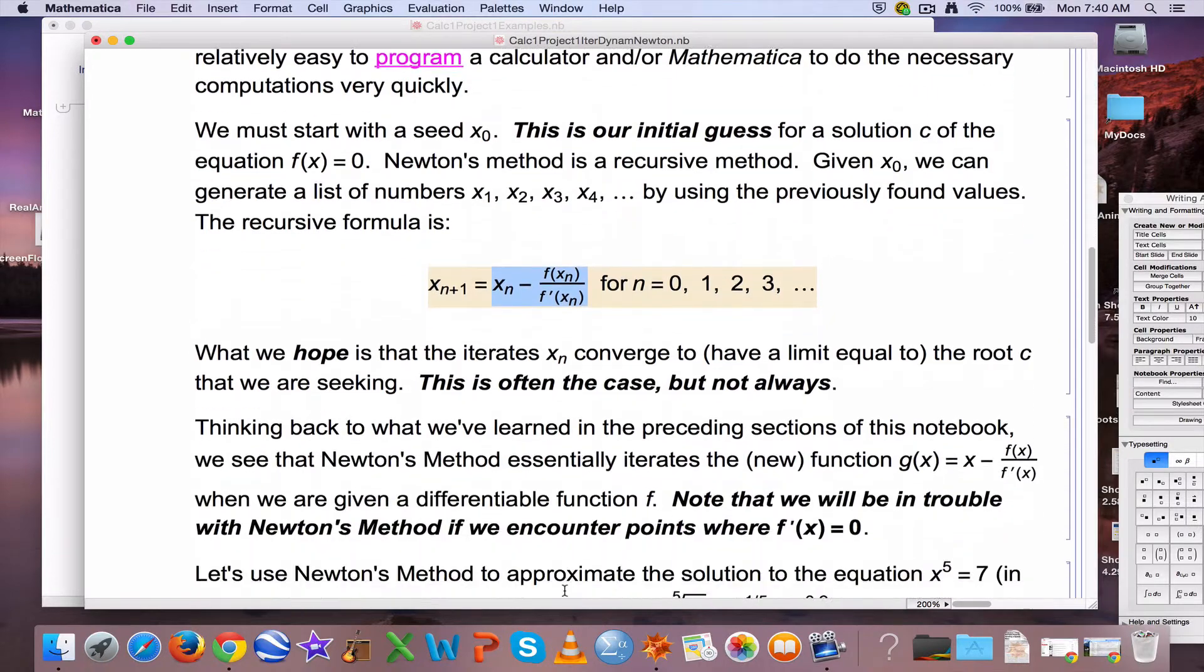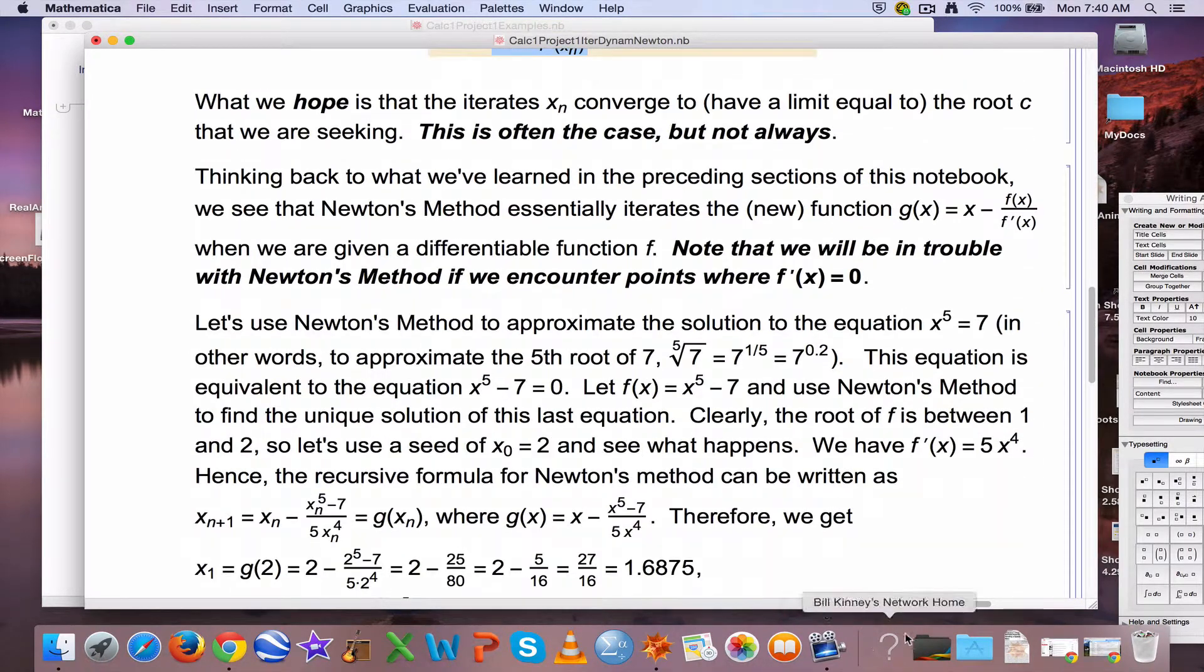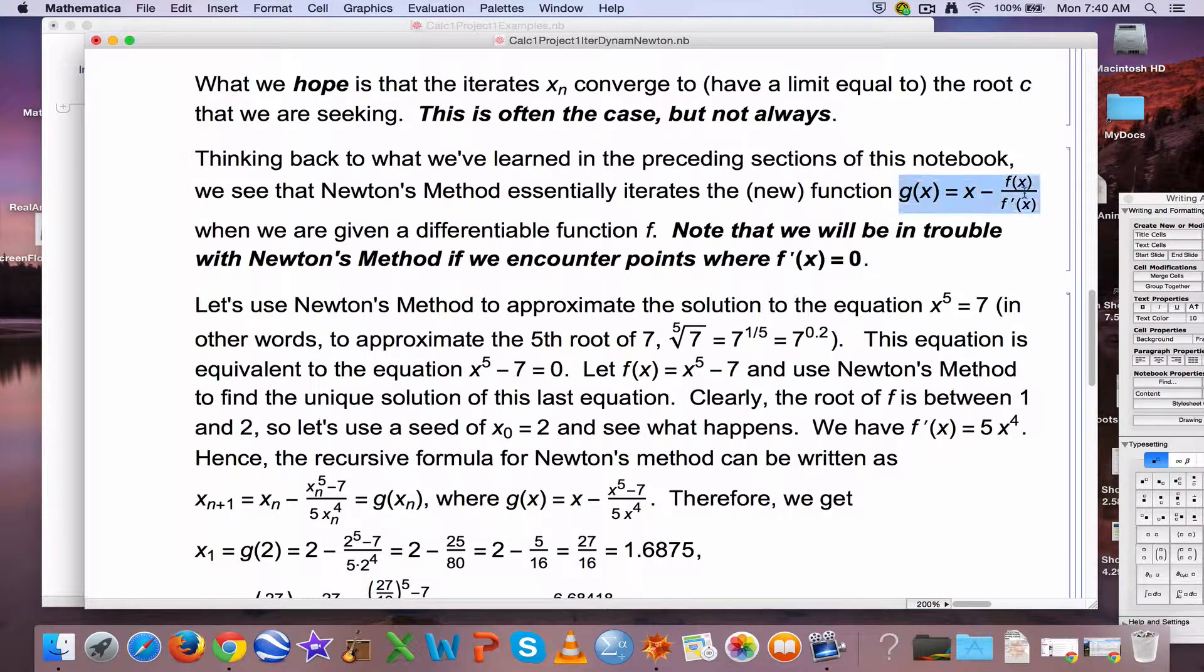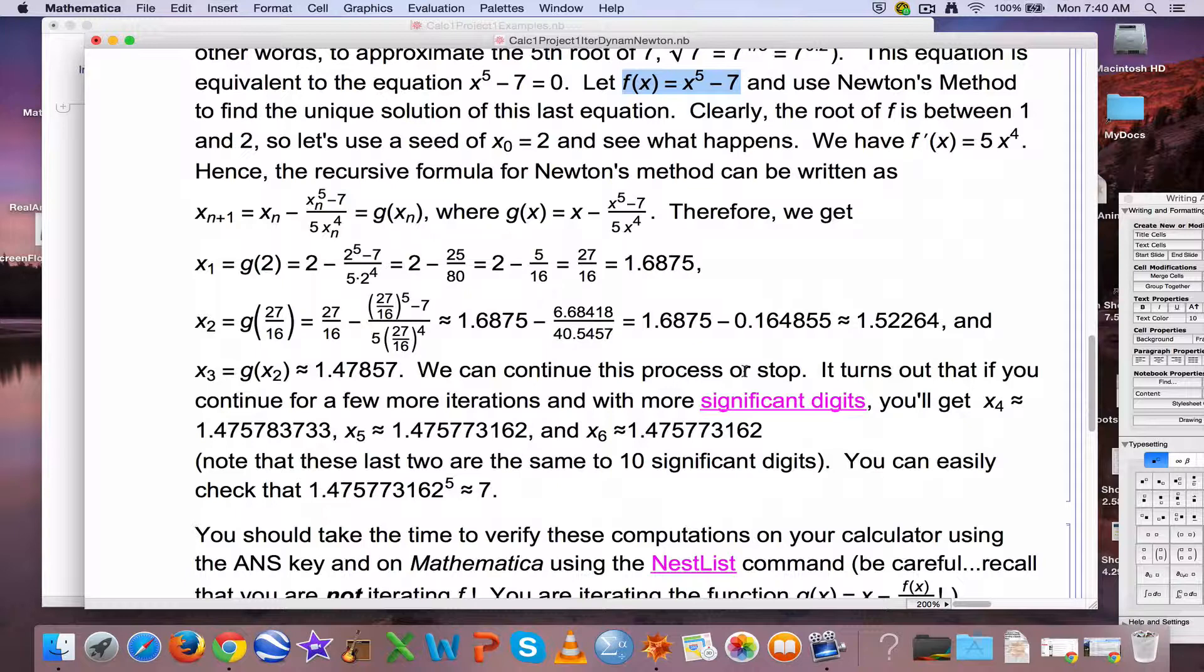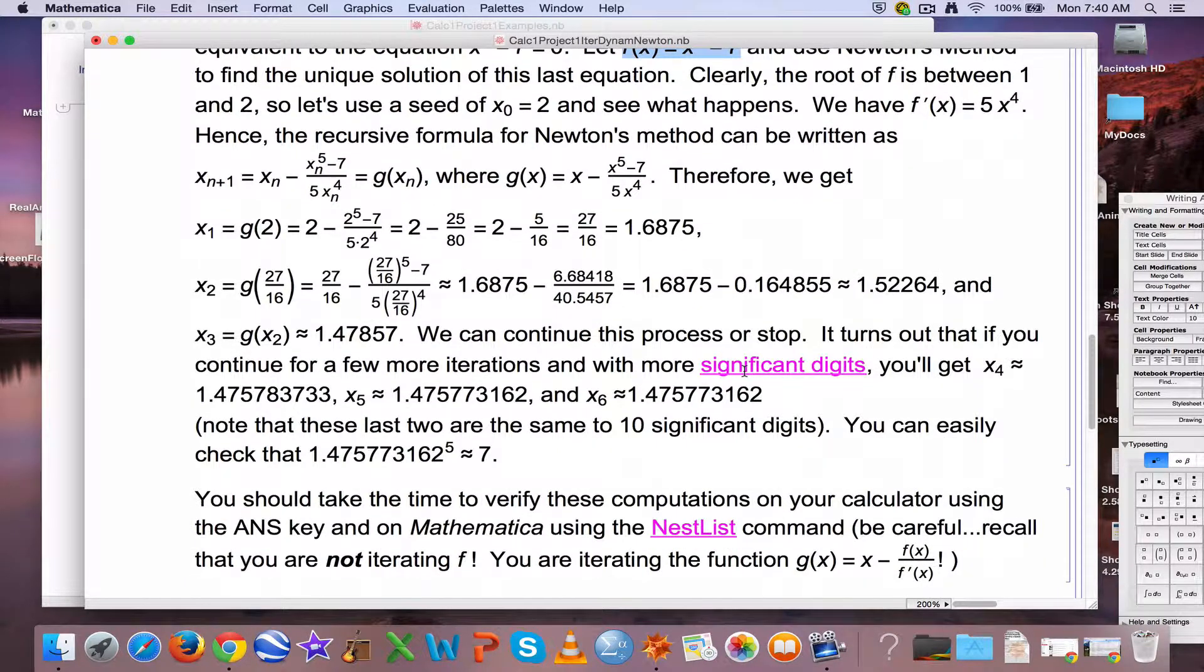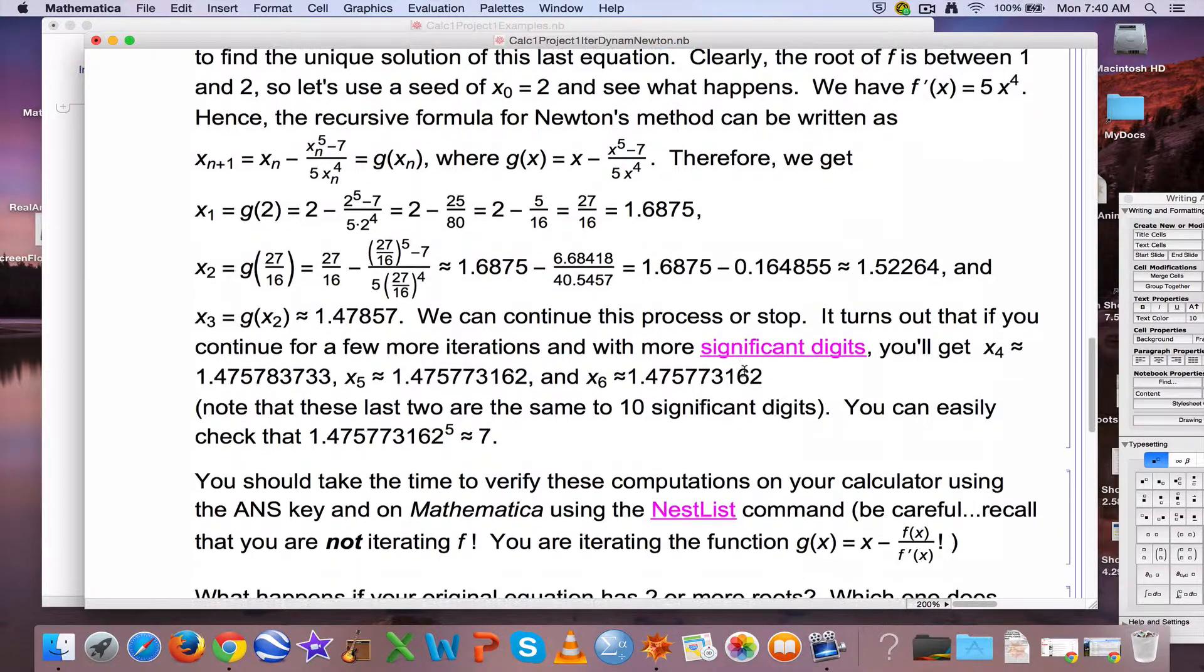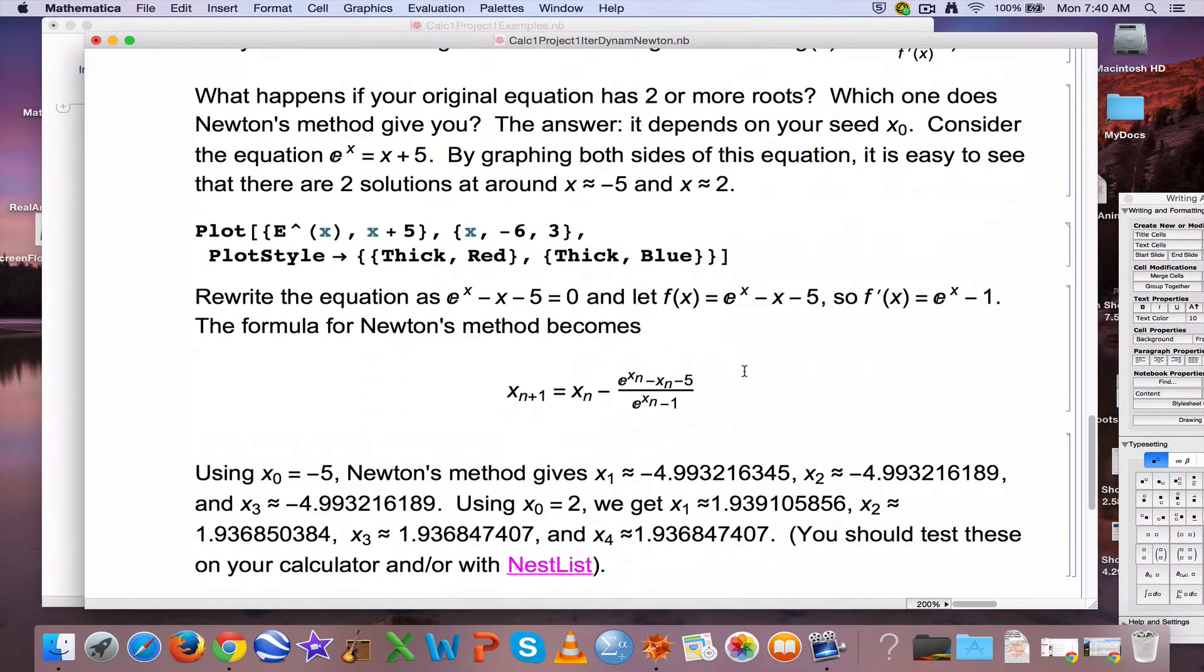You can read over this example here and check this with your calculator. Here is the function that we're iterating, g of x. If for example you want to approximate the fifth root of seven, the real root of that equation right there, what you're really putting into Newton's method is f of x equals x to the fifth minus seven, and you're trying to find the real zero of that function. You can check these numbers with your calculator. You can see it converges to the root pretty quickly. After just five iterations, we are good to ten significant digits.